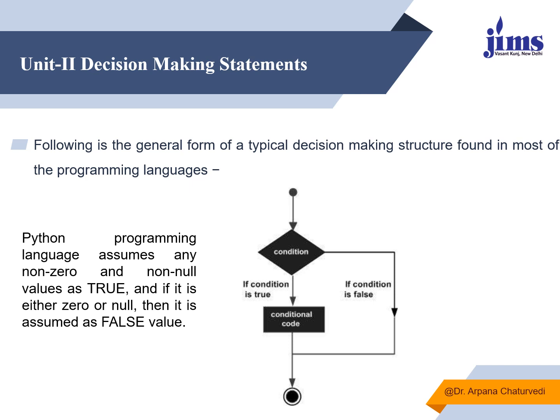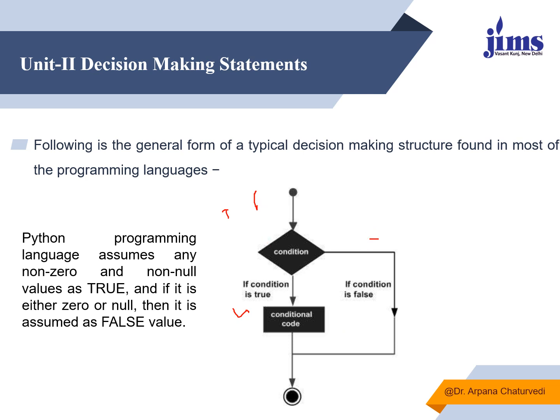Looking at this flowchart diagram, the flow of statements is coming in sequence. When control reaches a condition written by the programmer, that condition can return two values: true or false. You check if the condition results in true — what statements are to be executed — and when the condition returns false, whether to exit directly or take some other action. This is how decision-making statement execution flows in a program.